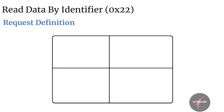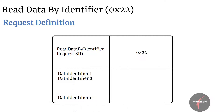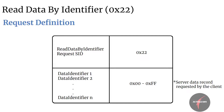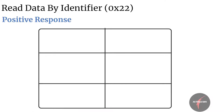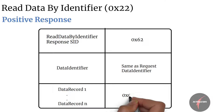The Read Data by Identifier request SID maps to value 0x22, followed by one or more data identifiers which shall support values in the range of 0x00 to 0xFF. The data identifier identifies the server data record being requested by the client. The service does not support a sub-function parameter. The positive response contains SID 0x62, followed by the data identifier same as the request, which is then followed by the data record identified by that data identifier.